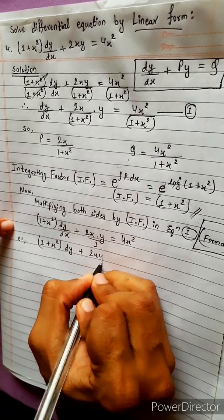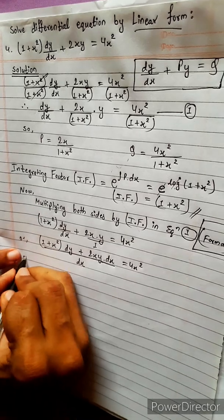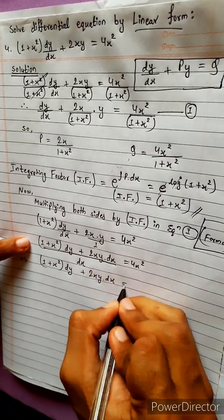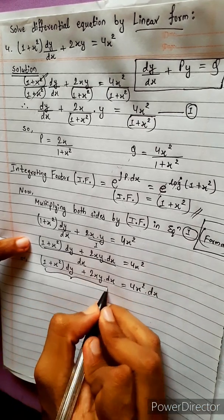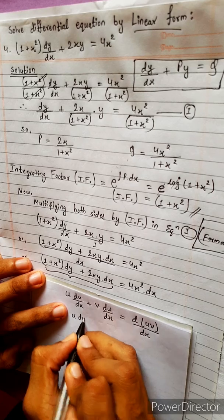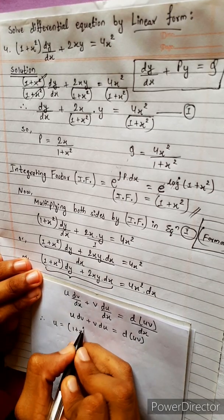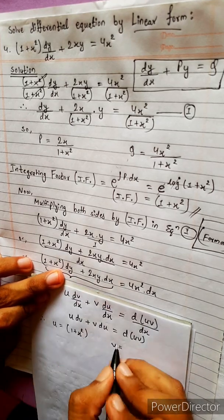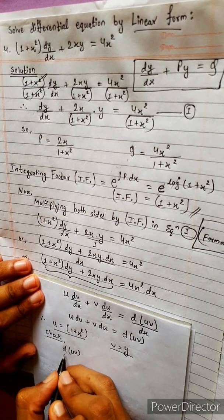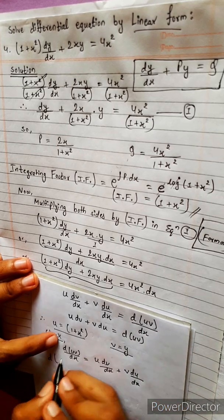Multiplying through, we get: (1 plus x squared) dy plus 2xy dx equals 4x squared dx. We can recognize this formula — using the product rule, u dv plus v du, where u equals 1 plus x squared and v equals y.